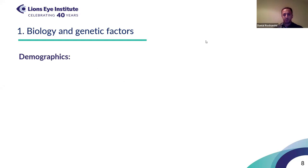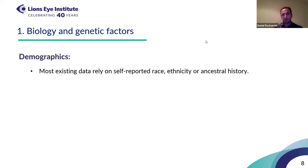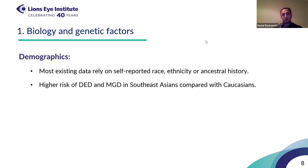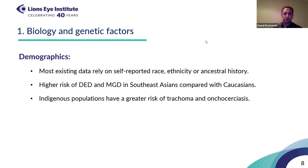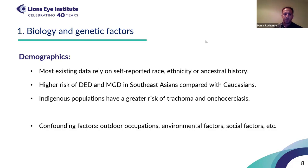The third biological factor is demographics — ethnicity, racial factors, and ancestral history — though since in most studies these factors are self-reported, any conclusion should be made with caution. Most studies have shown that Southeast Asian populations have a higher risk of developing dry eye disease and meibomian gland dysfunction compared with Caucasians. Indigenous populations have a greater risk of trachoma and onchocerciasis, though there may be confounding factors like increased outdoor time and other environmental factors.